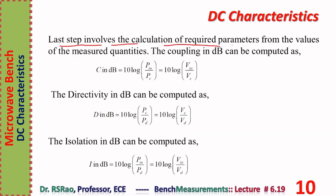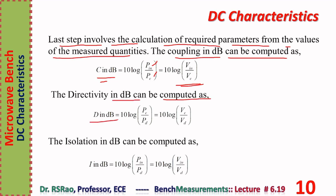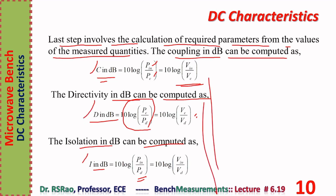The last step involves calculating the required parameters from the measured values. Coupling in dB: C = 10 log(P_in/PC). Since V_in ∝ P_in and VC ∝ PC, the power ratio can be replaced by the voltage ratio. Directivity in dB: D = 10 log(PC/PD), where VC/VD can replace the power ratio. Isolation in dB: I = 10 log(P_in/PD), where V_in/VD can replace the power ratio.